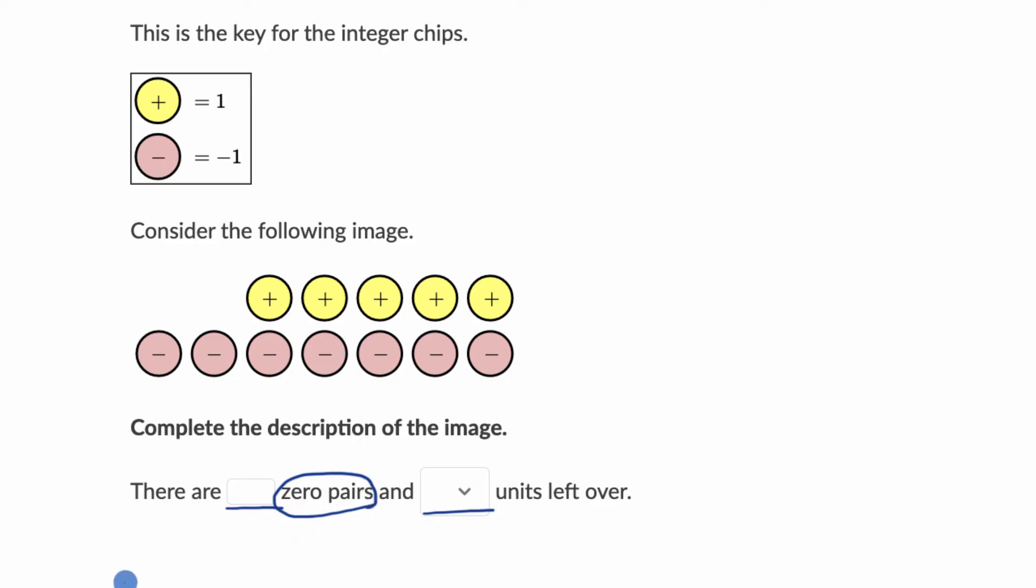So a zero pair is when you take two opposite numbers and they essentially, when you add them, they cancel out to get to zero. An example of that would be one plus negative one. These two numbers are opposites. So they are a zero pair because when you add them together, you get zero.